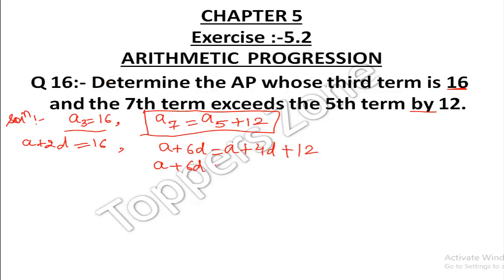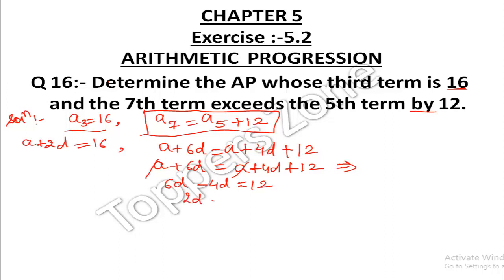So we write: a + 6d = a + 4d + 12. Here, a cancels from both sides, leaving 6d − 4d = 12, so 2d = 12, and therefore d = 12 ÷ 2 = 6.